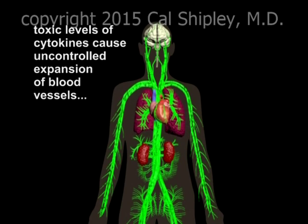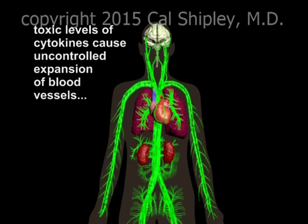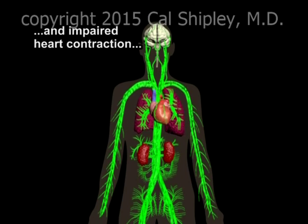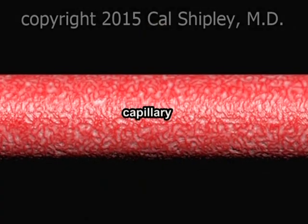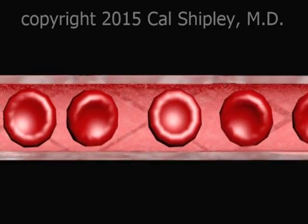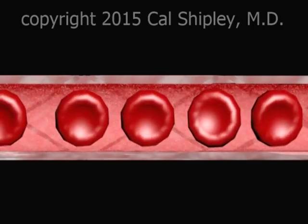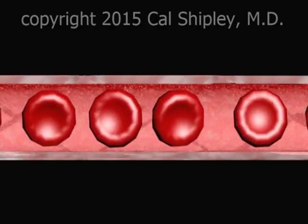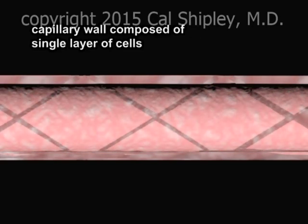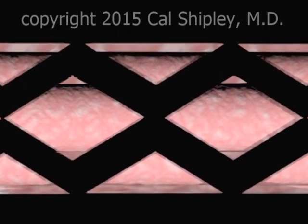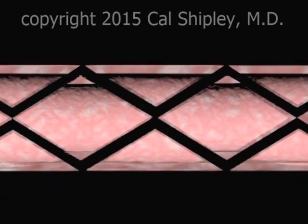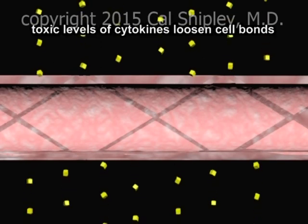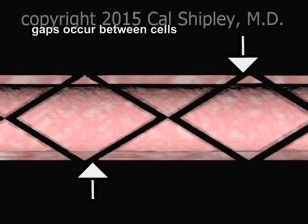Cytokine toxicity causes excessive expansion or dilation of blood vessels. Contractility, or pumping action of the heart, is impaired. At toxic levels, cytokines also increase vascular permeability, particularly at the capillary level. Capillaries are the smallest branches of the arterial system. They serve as the point at which oxygen and nutrients are transferred to bodily tissues, and their inside diameter is just large enough to accommodate a column of red blood cells moving in single file. The wall of a capillary consists of a single layer of cells, held together by chemical bonds. Toxic levels of cytokines cause the bonds between cells to loosen, creating gaps between the cells and allowing leakage of serum from the capillary.